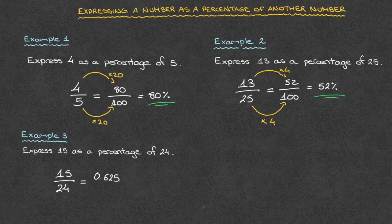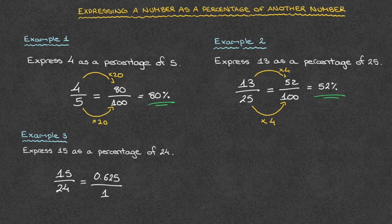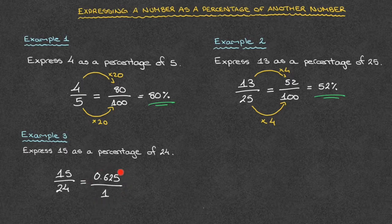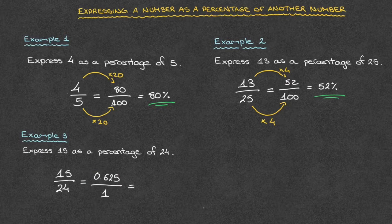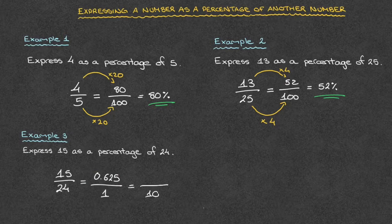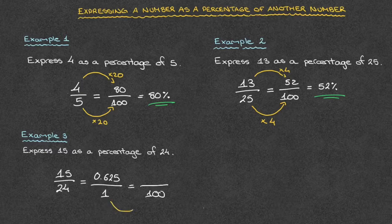We can think of this 0.625 as 0.625 over 1. Now that that's done, we're going to rewrite this fraction as an equivalent fraction over 100. In other words, we rewrite this as something over 100. Now to get from 1 to 100, well, we multiply by 100.